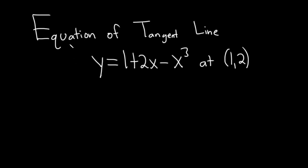Hi, in this problem we're going to find the equation of the tangent line to the graph of this function y equals 1 plus 2x minus x cubed at the ordered pair (1, 2). Let's go ahead and work through the solution.